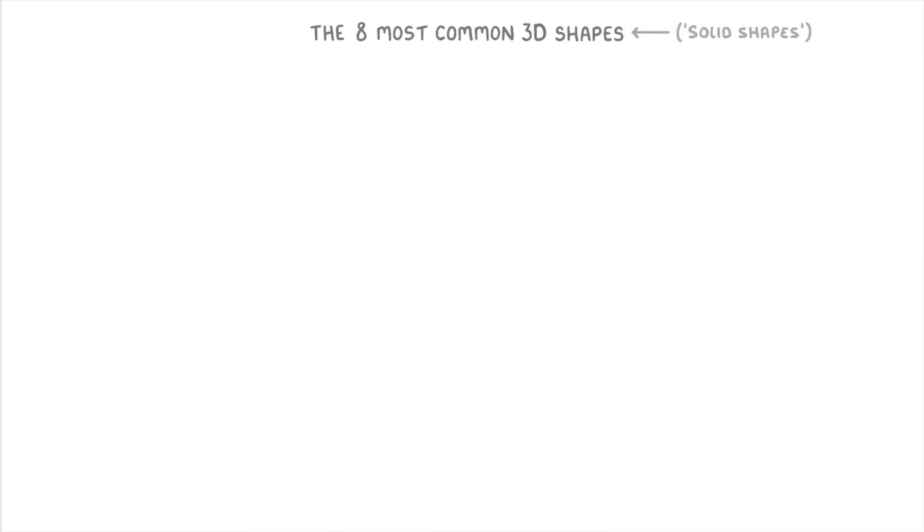First though, we need to quickly cover how to label the different parts of 3D shapes. If you remember 2D shapes, like a square, they have corners and sides.